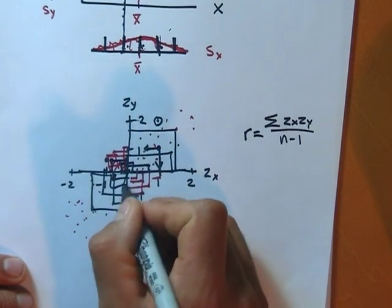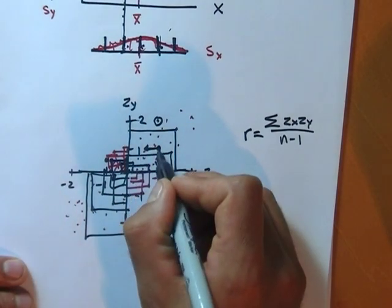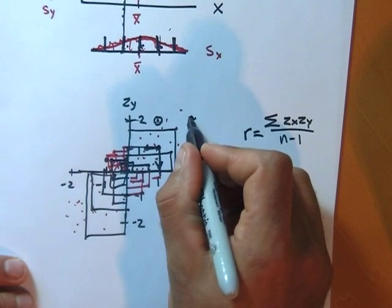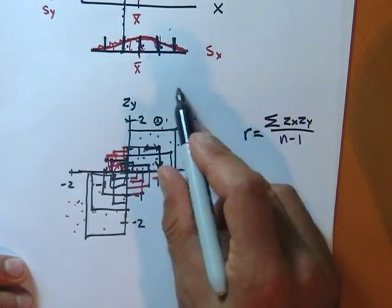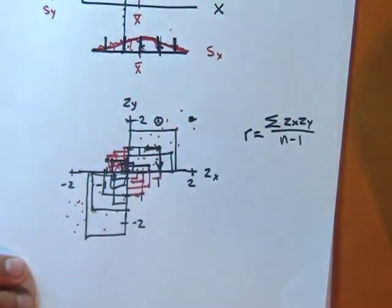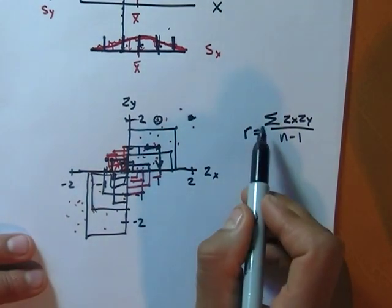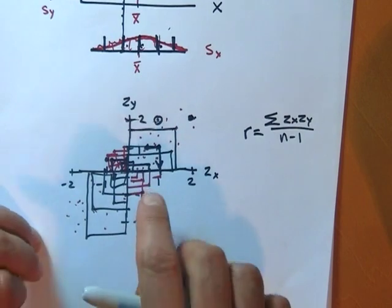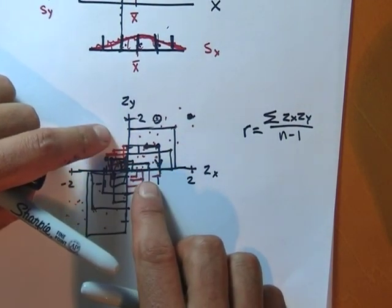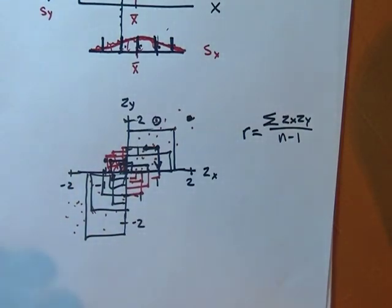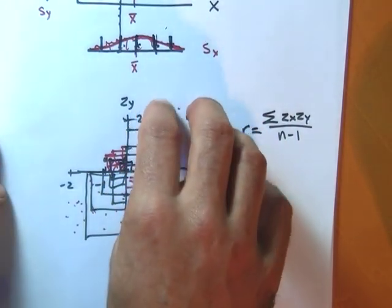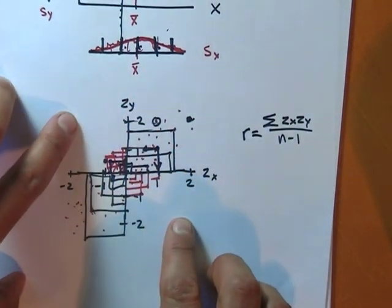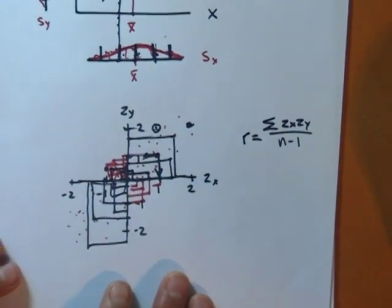In a positive association, there will be lots of positive rectangle areas to add up and only a few negatives. But if this were a negative association, the scatter would go the other way — lots of negative rectangles and not many positives. So you can see intuitively why the formula works. Also note: as you go further out — like a point at (2,2) contributes four, a point at (3,3) contributes nine — outliers have a big impact.